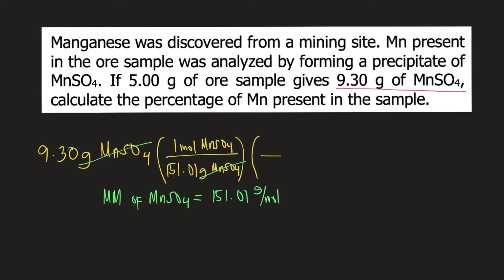Next is to convert moles of MnSO4 into moles of Mn. So 1 mole of MnSO4 contains 1 mole of Mn. How do I know it's 1 mole of Mn? You just look at the formula. MnSO4 contains 1 mole of Mn, 1 mole of S, and 4 moles of oxygen. So moles of MnSO4 would cancel. We now have moles of Mn.